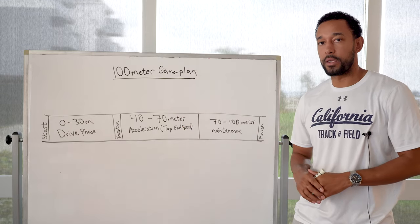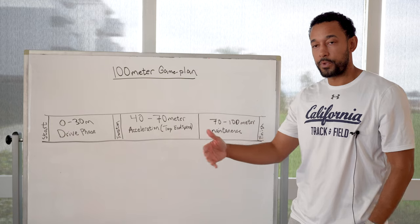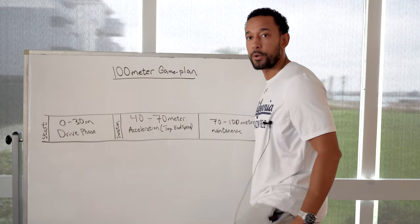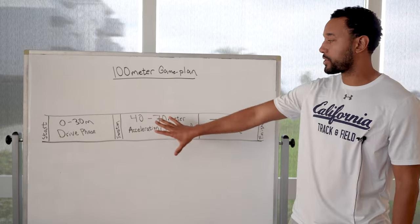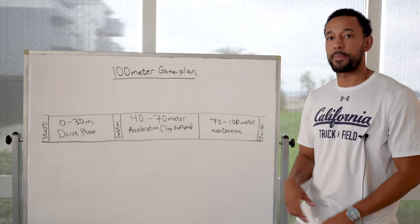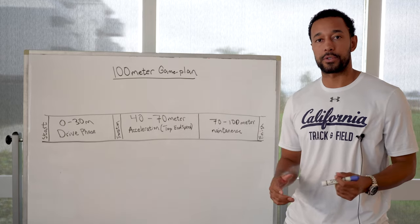So the drive phase is going to be the part where you're pushing the track behind you. You don't want your heel coming up to your butt. You don't want a full cycle. 0 to 30, you should be at a 45 degree angle, really focused on your drive phase.